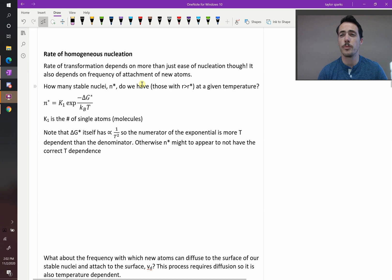All right, let's say a few more words about the rate of homogeneous nucleation. So the rate of transformation overall is going to have to do with more than just the ease of nucleation. If something's really easy to nucleate, if you can form these nuclei really easy, that doesn't tell you the total transformation rate. It takes into account that, but it also matters on some other things.